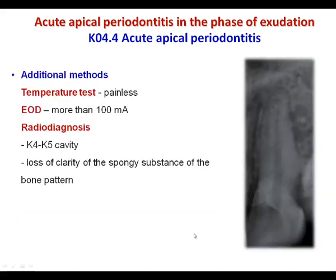Additional methods for the exudation phase: temperature test is painless; electroodontodiagnostics also shows more than 100 µA. Radiodiagnostics reveals K4 or K5 cavity — deep carious cavity in deep dentin layers or communicating with the pulp cavity. In the bone, early changes are visible as loss of clarity of the spongy substance pattern.